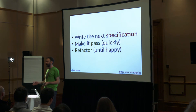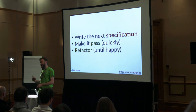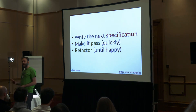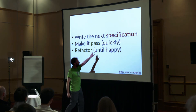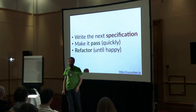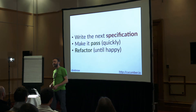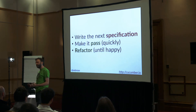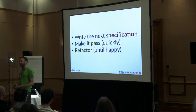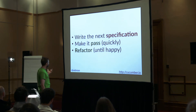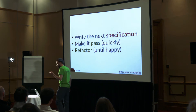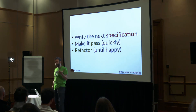The second step — make it pass — needs to be stressed: the idea is to make it pass quickly. This is sometimes called 'shameless green.' The intention is not to design everything perfectly; it's to get that test passing so your collection of tests goes from failing to all passing. Now that all your tests are passing, it's safe to refactor. The third thing is refactor.